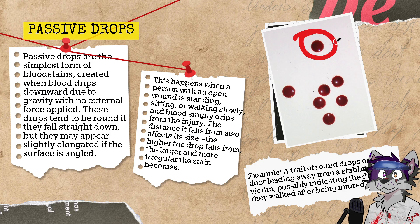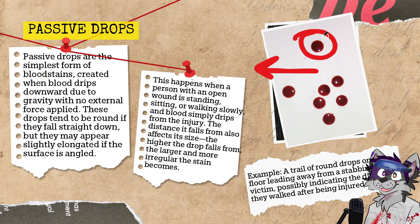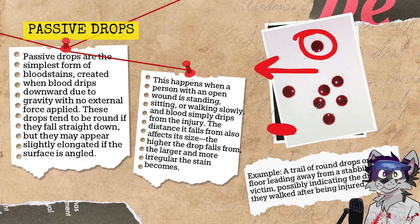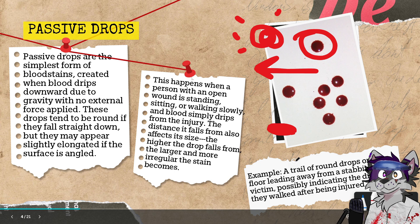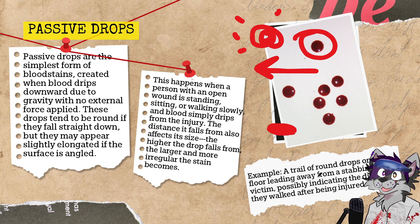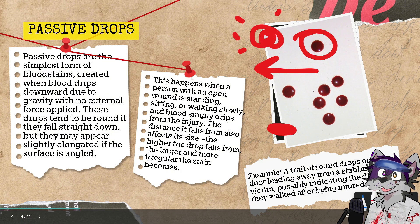Passive drops tend to be round and fall straight down, but may appear elongated if they fall at an angle or at a different speed. For example, if somebody is walking fast, instead of landing round it may appear more elongated. This happens when a person with a wound is standing, sitting, or walking slowly. The distance the blood falls also affects its size — closer to the ground produces a smaller impact, while a higher drop creates a bigger, more spread out stain. An example would be a trail of round drops on the floor leading away from a stabbing victim.